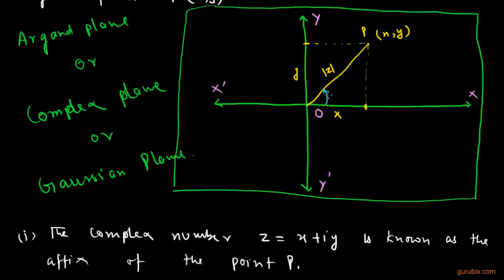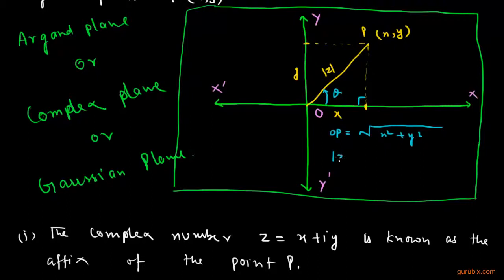Suppose we denote this acute angle as theta, and this is a right angle. Then the line OP is equal to the square root of x-squared plus y-squared, or we can say mod z equals the square root of the sum of squares of the real part and the imaginary part.